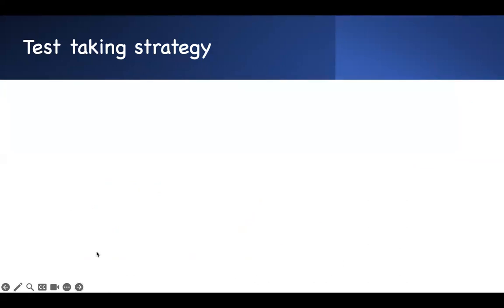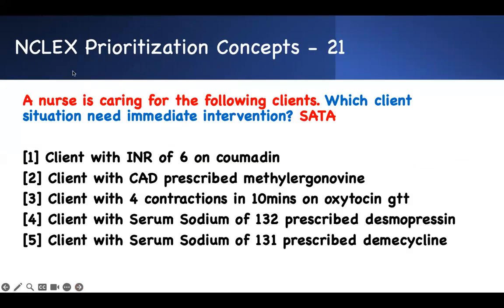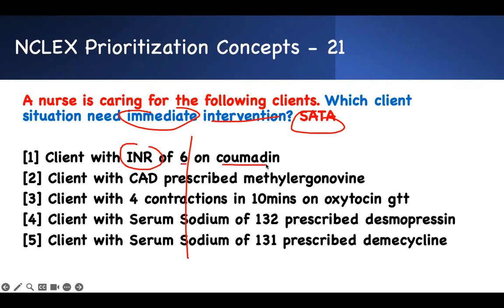So values 1, 2, and 7 are all normal and don't need to be reported to the provider. The only thing I need to report is BUN of 40. That's the beginning of this strategy. Now let's get to question 21. We already had 20 cases — select-all-that-apply. Which client situation needs immediate intervention?